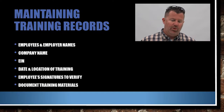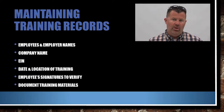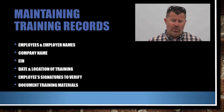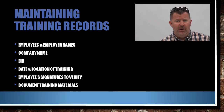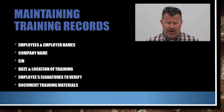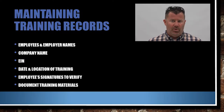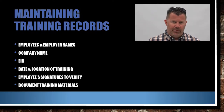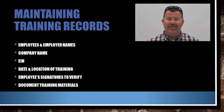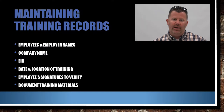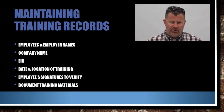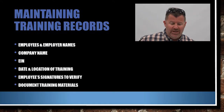Maintaining training records: you need the employee and employer names, the company name, your EIN or employer identification number — that's your tax ID, like a social security number for your business. Even sole proprietors can file for a separate EIN. Keep the business separate from personal matters to protect yourself and your personal assets.